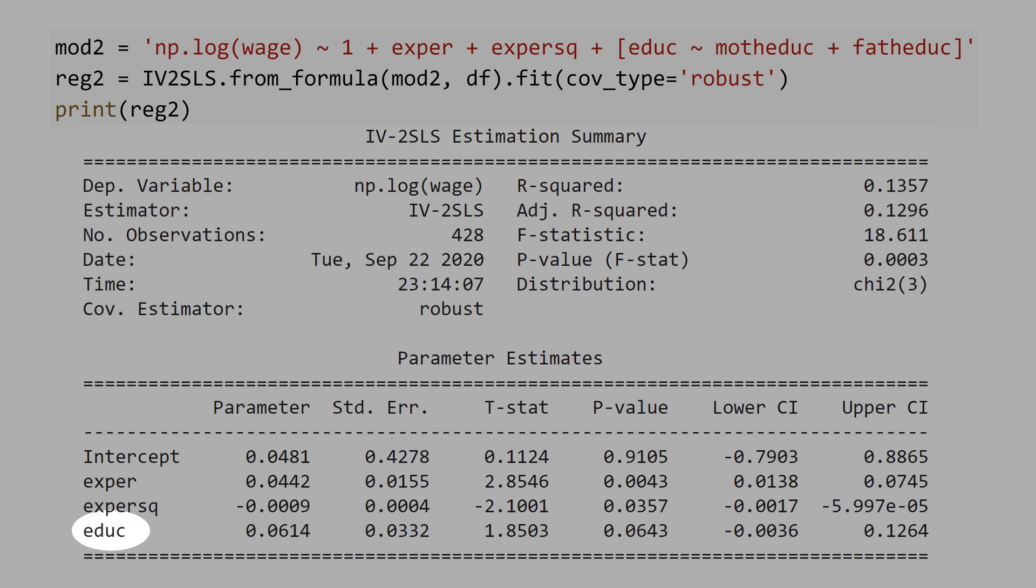That means that this educ here is the predicted value of education, the education hat. This syntax here makes the computer run the first stage and second stage behind the scenes, and then you see the result.